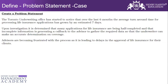Now it's an exercise for us — creating a problem statement. A Toronto underwriting office had started to notice that over the last six months, the average turnaround time for processing life insurance applications has grown by an estimated seven days. Upon investigation, it was determined that many applications for life insurance are being half-completed, and that incomplete information is generating a callback to the advisor to gather the required data so that the underwriter can make an accurate determination on coverage. Advisors are becoming frustrated with the process, leading to delays in the approval of life insurance for their clients.